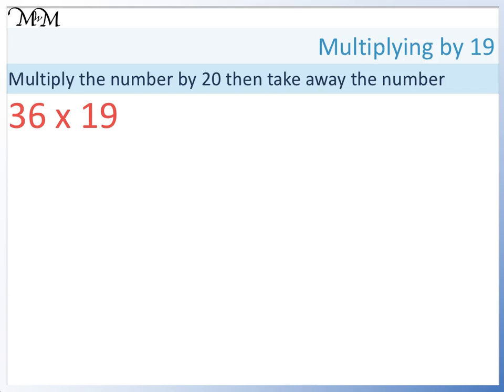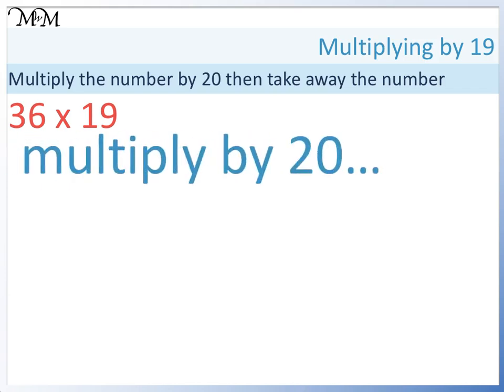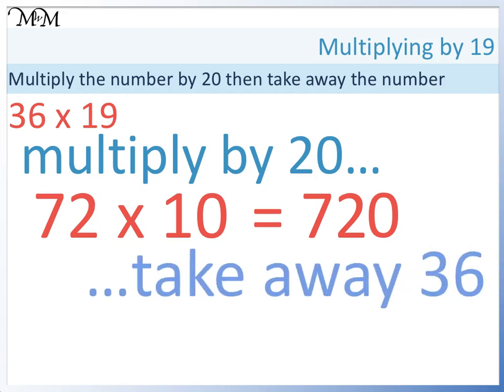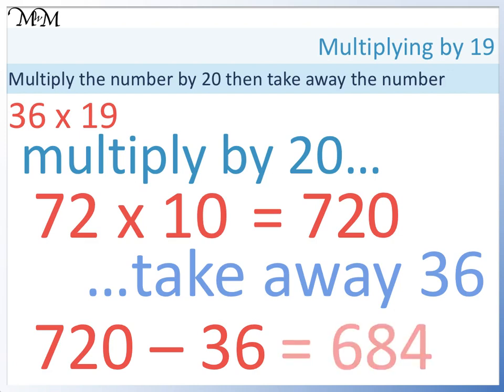36 times 19. We multiply by 20. 36 times 2 equals 72. 72 times 10 equals 720. We want 19 lots of 36, not 20 lots, so we take away 1 lot of 36. 720 take away 36. To do this mentally we could take away 20 to give us 700, then we only need to take away another 16 to give us 684.